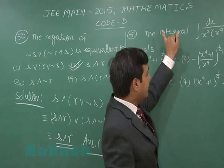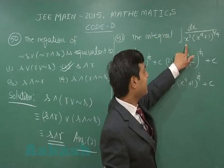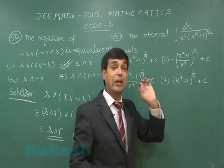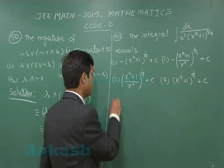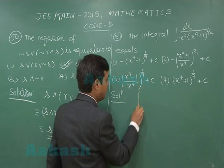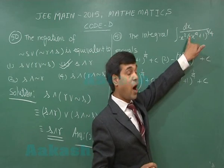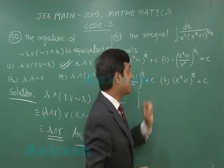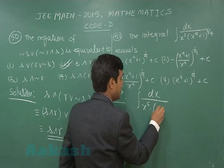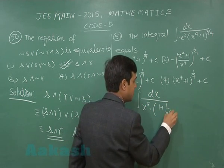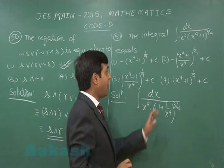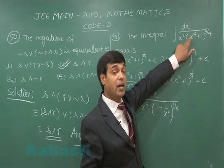Let us go to question number 51: the integral of dx / (x²·(x⁴+1)^(3/4)) — four options are given. This is a straightforward integration. We take x⁴ out of the bracket, which becomes x³, giving 1/x⁵ · (1 + 1/x⁴)^(3/4) dx.